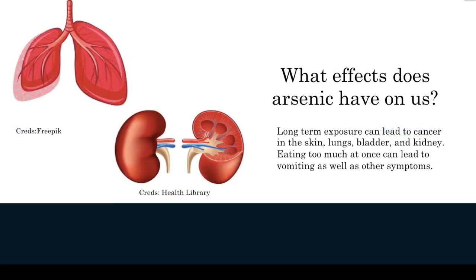What effects does arsenic have on us? Some effects on the human body are cancer on the lungs, skin, bladder, and kidney. According to Green Facts, it can also cause thickening and pigmentation on the skin. Ingesting large amounts of arsenic can lead to gastrointestinal symptoms such as severe vomiting, disturbance to the blood circulation, and even death.